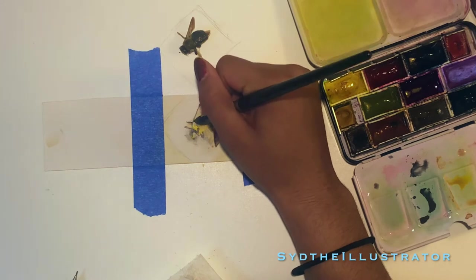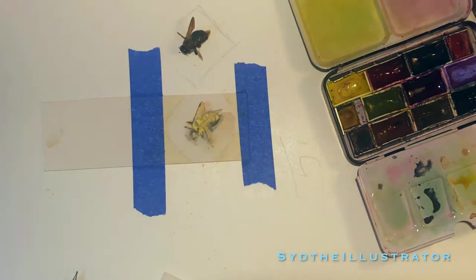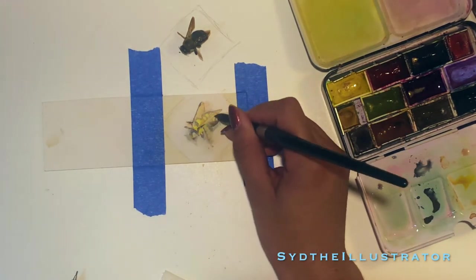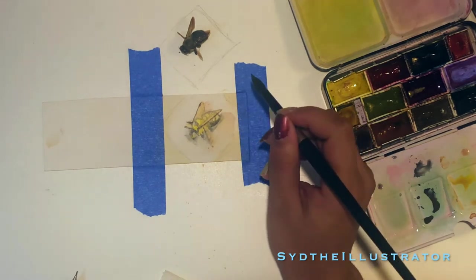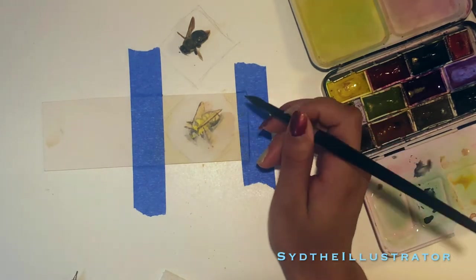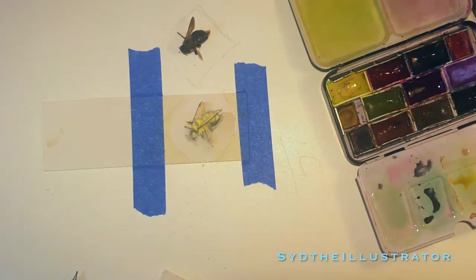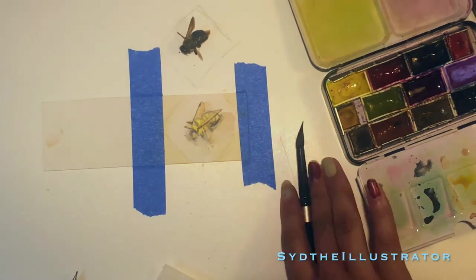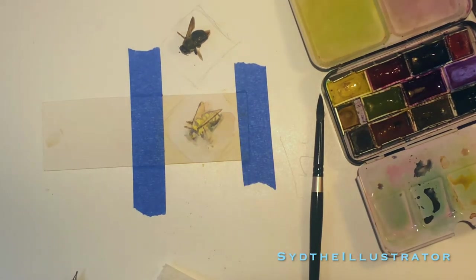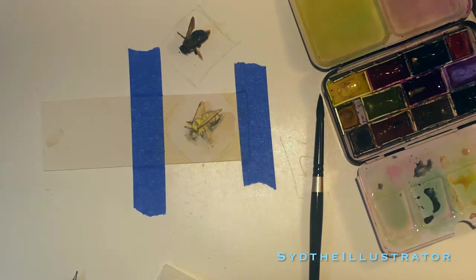And then right here I am adding the darker section to the wings because the thickest part of the wing is darkest and it's kind of got a black outline to it. As it thins out that line goes away, but the front section of the wing has that outline, so I wanted to make sure to differentiate that.